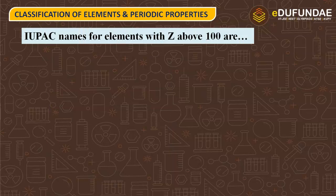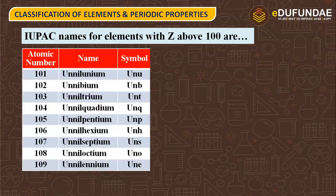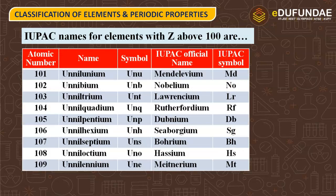IUPAC names for elements with atomic number Z above 100 — let us see. Here is the chart which involves atomic number, their name, symbol, IUPAC official name, and IUPAC symbol.